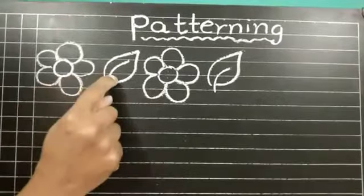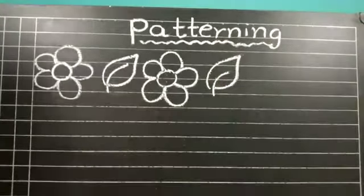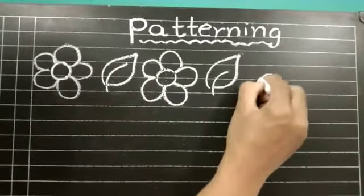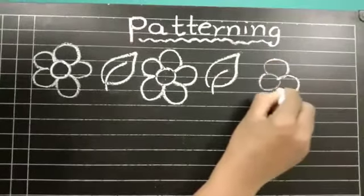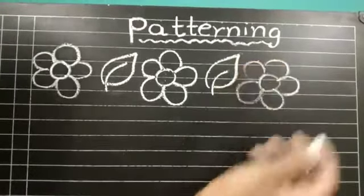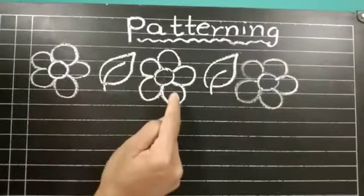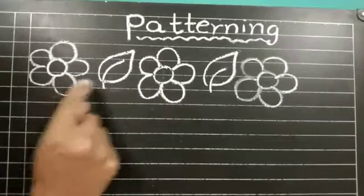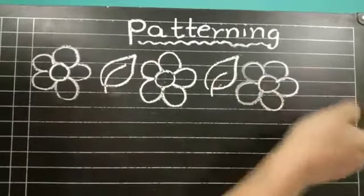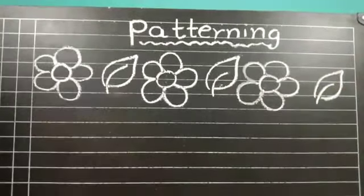Say flower, leaf. Flower, leaf. Then what will come next? Flower. Then what will come next? We will see the basic pattern first. Flower, leaf. Flower, leaf. Flower and leaf. Very good children.